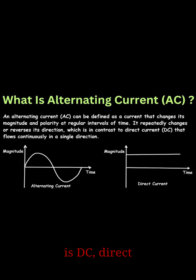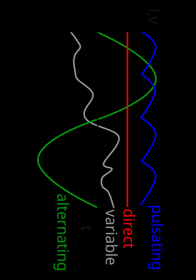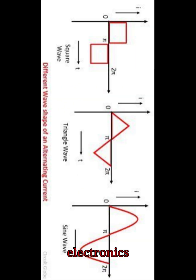What is DC — direct current? In DC, the flow of electric charge is one-directional, meaning electrons move steadily in a single direction. Sources include batteries, solar cells, and fuel cells. Its waveform is a straight constant line with no oscillation. Common uses include powering electronics like laptops, mobile phones, and flashlights.